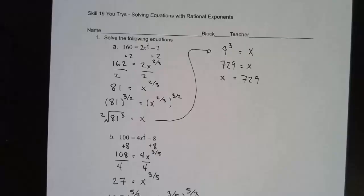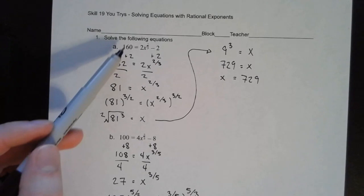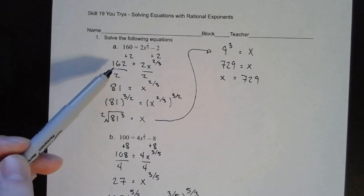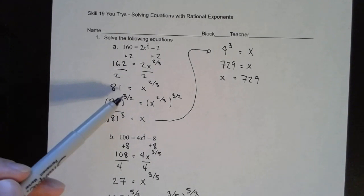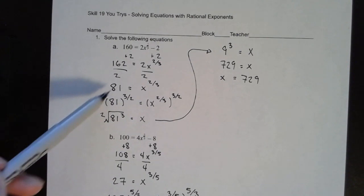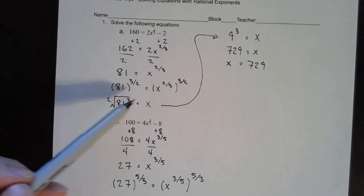Here are the answers for the u-try problems. We need to isolate the variable first — I added 2 on both sides, and 160 plus 2 is 162. Then I divide by 2 on both sides: 162 divided by 2 gives me 81. So I have x to the two-thirds power equals 81. To get rid of this two-thirds exponent I raise both sides to the three-halves power. I wrote 81 to the three-halves in radical form — the square root of 81 is 9, and 9 to the third power is 729. So x equals 729.